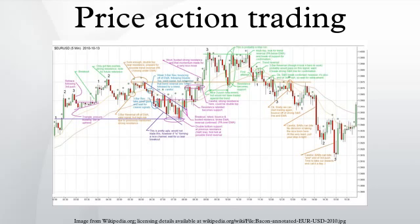Brief explanation of OHLC bar and candlestick terminology: open is the first price of a bar; close is the last price of the bar; high is the highest price; low is the lowest price; body is the part of the candlestick between the open and the close; tail is the parts of the candlestick not between the open and the close. A range bar is a bar with no body — the open and the close are at the same price and therefore there has been no net change over the time period. This is also known in Japanese candlestick terminology as a doji. A price action trader might consider a bar with a small body to be a range bar. It is termed range bar because the price during the period moved between a floor and a ceiling and ended more or less where it began.